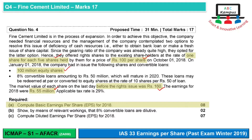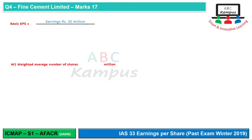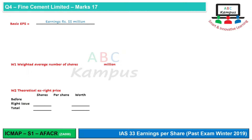So, we calculate basic EPS. Earnings are 55 million as given. For the number of shares we set up a table showing shares before the right issue and total after the right issue, including a weighted average calculation.